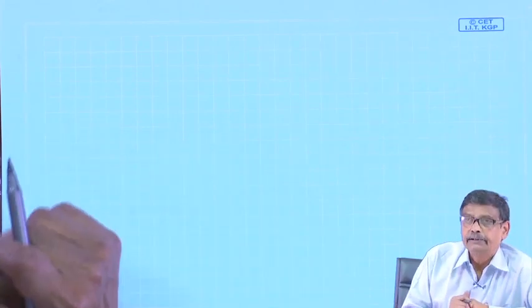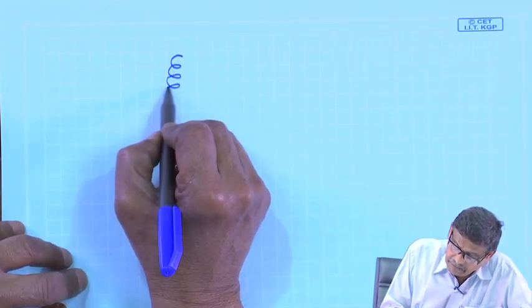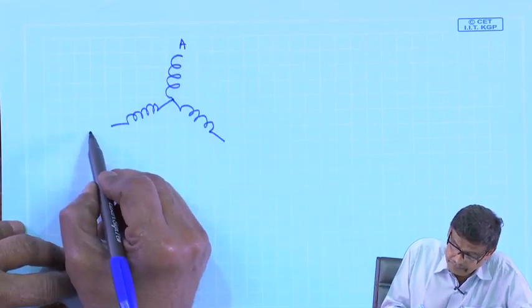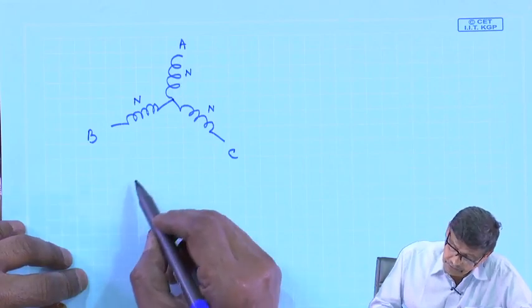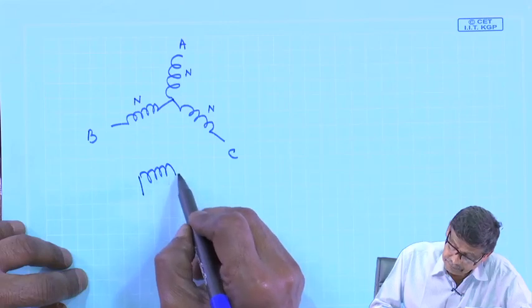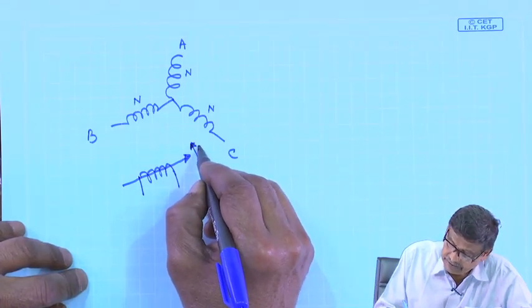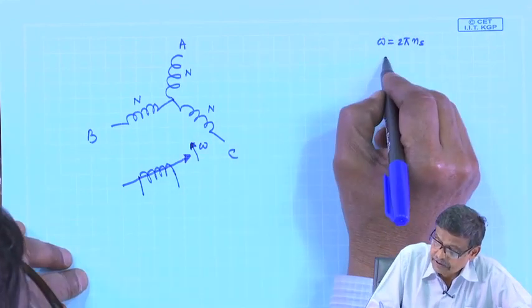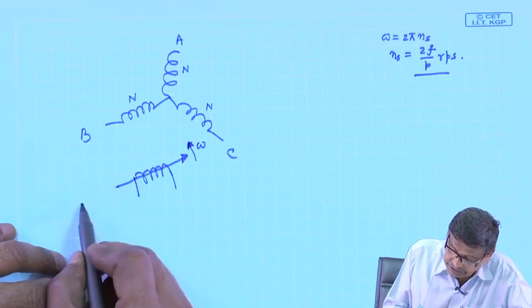Now I will try to understand the induced voltage in the synchronous machine. Consider the stator coils A, B, and C, each of N turns, and you have this field winding. It is moving with speed omega. Omega is 2π times Ns. Ns is the synchronous speed, 2F by P — in RPS. I will run this with the help of a prime mover, which may be a steam turbine, diesel engine, or a DC motor in the lab.